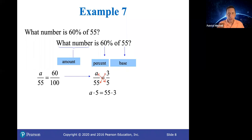So, lost track of my mouse here. Give me a sec. There we go. A times 5 equals 55 times 3. 55 times 3 is 165. So now we will divide both sides by 5. And that's going to give us a equals 165 divided by 5, which is 33. So 33 is 60% of 55.